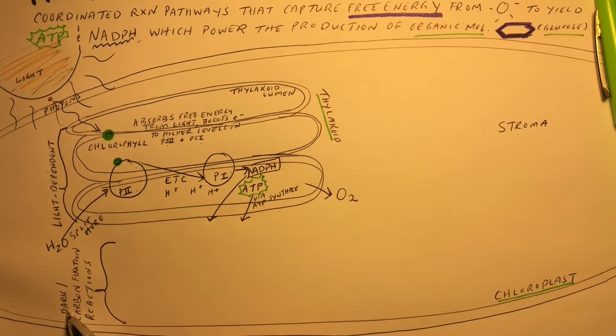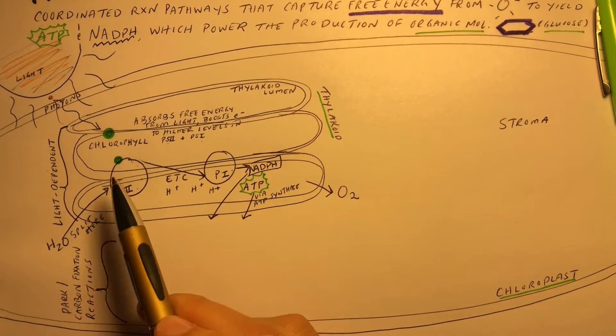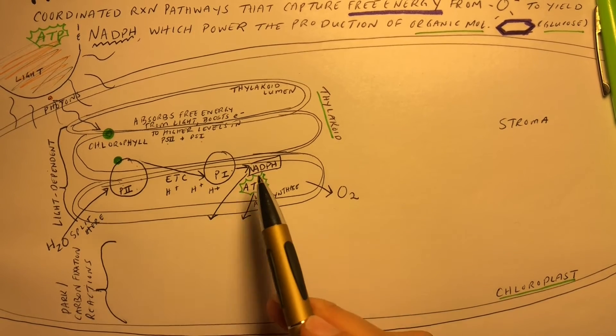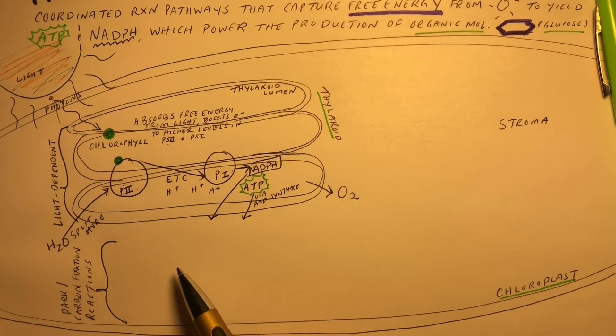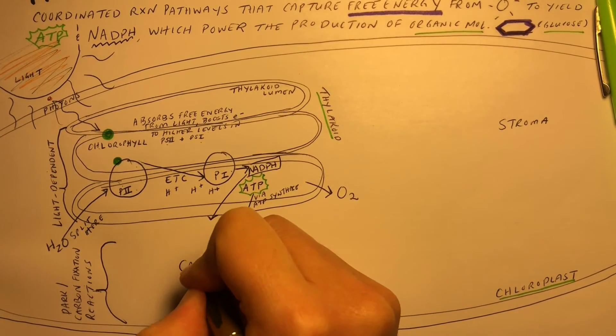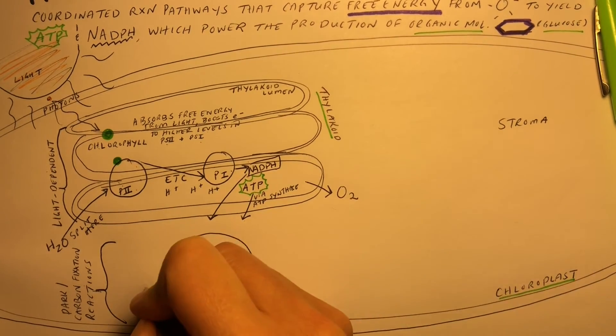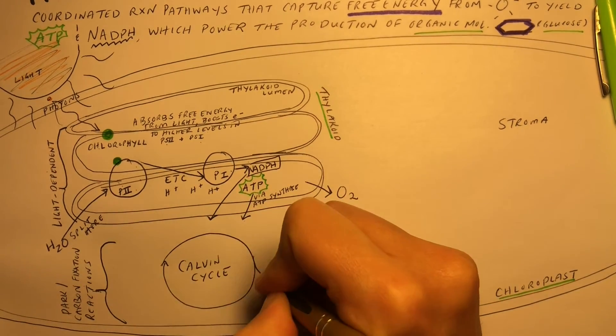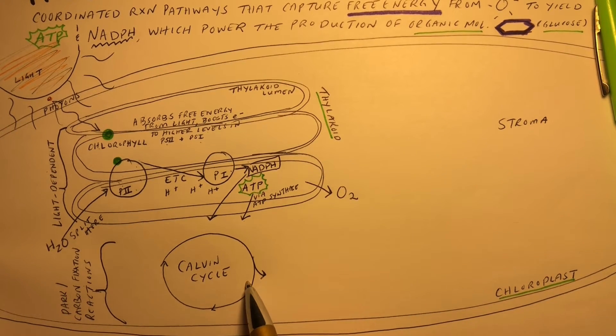Now let's move on to the dark or carbon fixation reactions. Remember, the energy captured in the light reaction is going to be transferred to ATP and NADPH, which will power the production of carbohydrates in the Calvin cycle. Now, there's a lot of steps and different enzymes involved in the Calvin cycle. You might have heard of one, Rubisco, before.